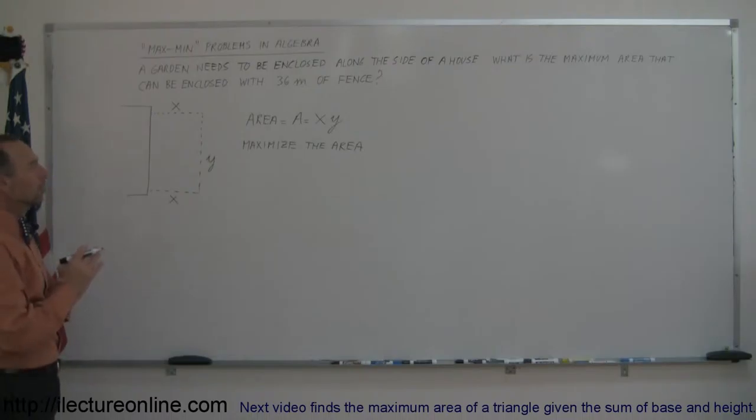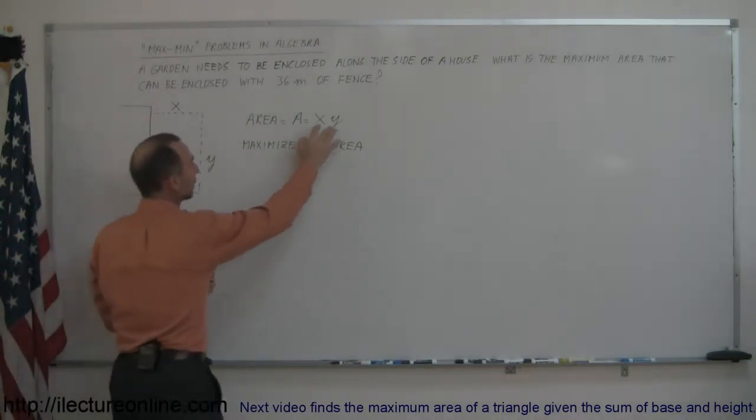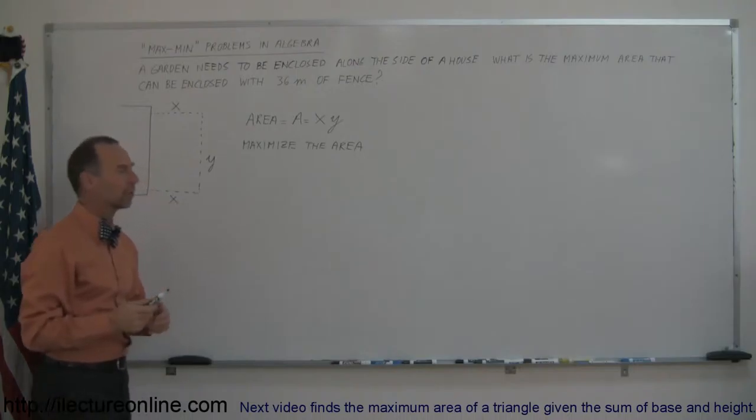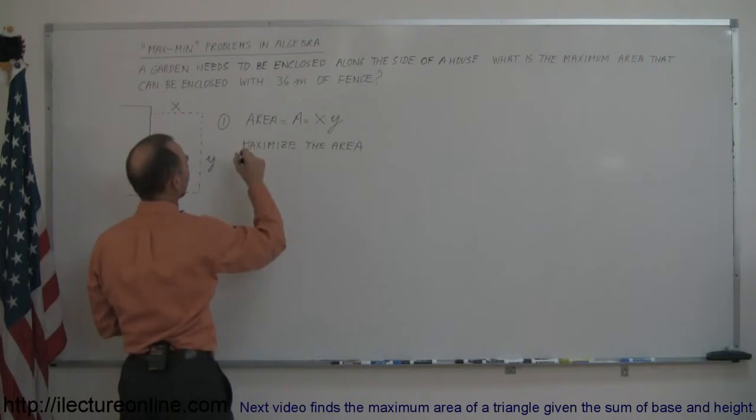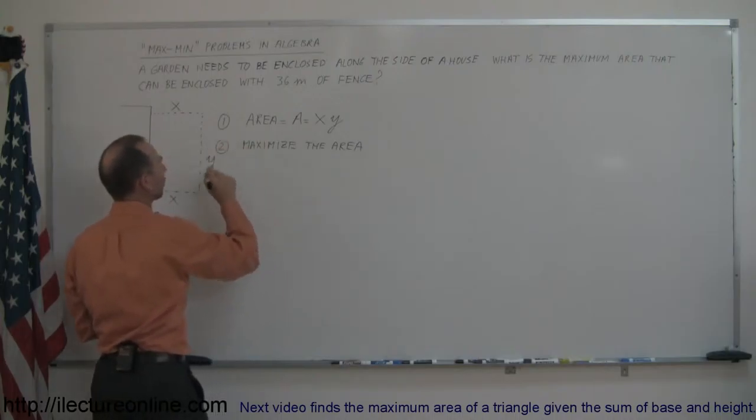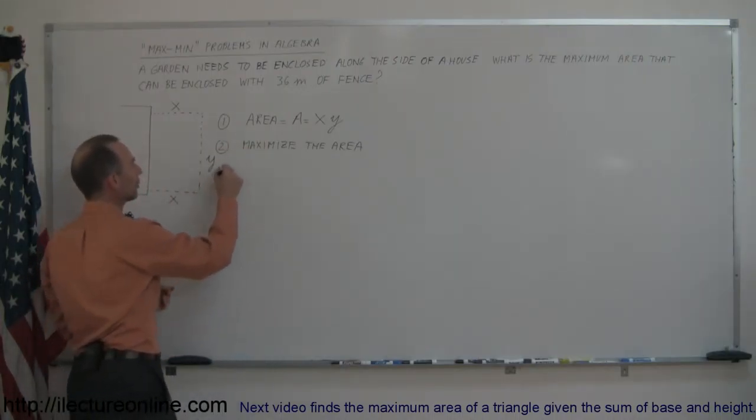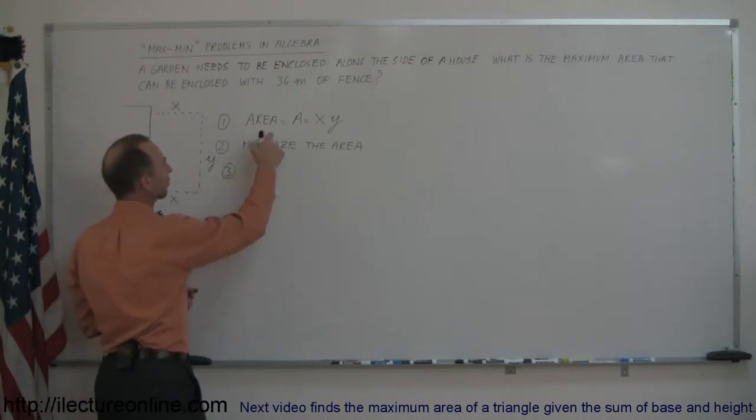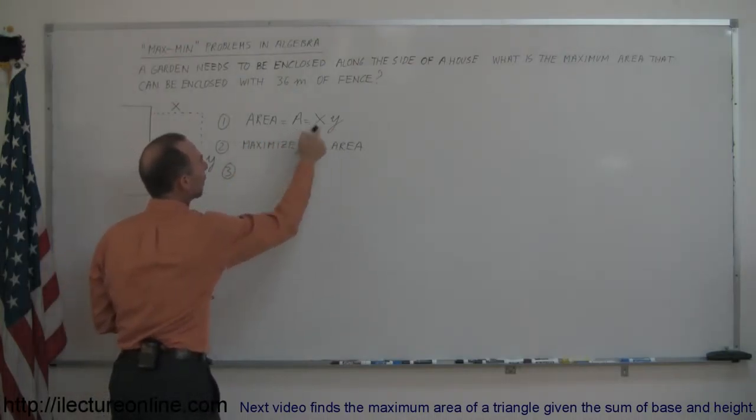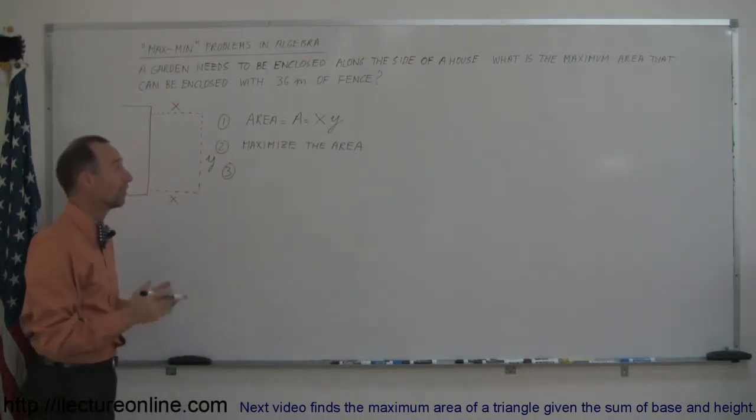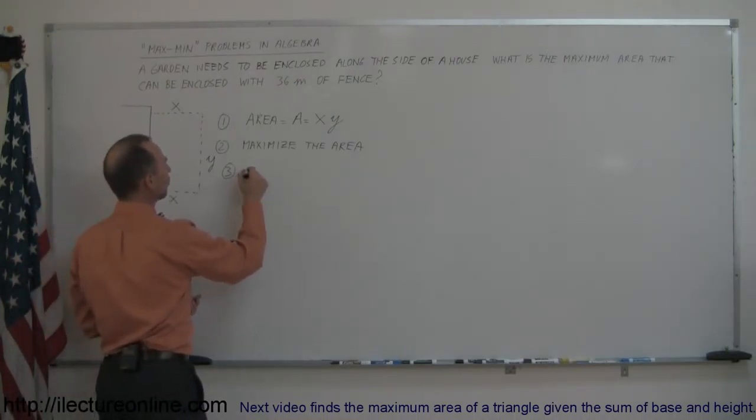So we need to come up with an equation that allows us to find the area, and it needs to be a quadratic equation. Of course, you can only have one variable here. A can only be dependent on either x or y. So we need to find some constraint. The first thing we do is find an equation. The second we do is realize what we're going to maximize. And then the third thing we need to do is we need to express the equation in terms of only one variable. In this case, we have two variables, x and y.